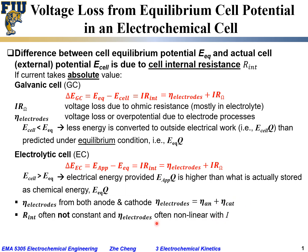It is important to note that both the internal cell resistance R_int and η_electrodes are often non-linear. This means R_int may not be a constant, and η_electrodes may also not have a linear dependence on current.